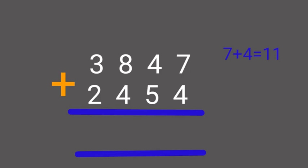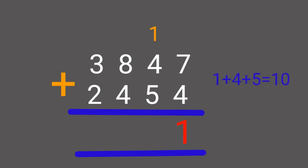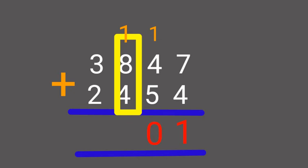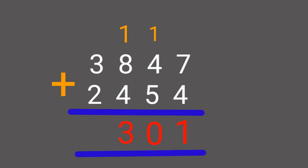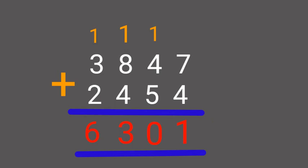Addition with carry. Example: Add 3847 plus 2454. First add from unit place: 7 plus 4 is equal to 11 — write 1 in the unit place and carry 1 to the tens place. Next add tens place: 1 plus 4 plus 5 is equal to 10 — write 0 in tens place, carry 1 to hundreds place. Add hundreds place: 1 plus 8 plus 4 is equal to 13 — write 3 in hundreds place, carry 1 to thousands place. Add thousands place: 1 plus 3 plus 2 is equal to 6. Therefore total is 6301.